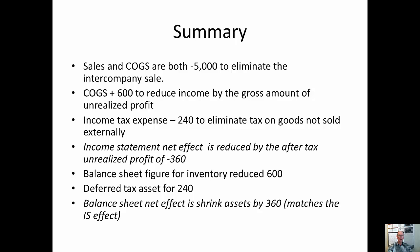The net effect on your income statement is to reduce consolidated net income by the after-tax amount of this unrealized inventory sale — $360. On the balance sheet, we reduced inventory $600 and created a deferred tax asset for $240, and the net effect is to shrink the balance sheet by $360. In the next video, we're going to take these same numbers and look at what we do the next year when this inventory is actually sold to an external party.